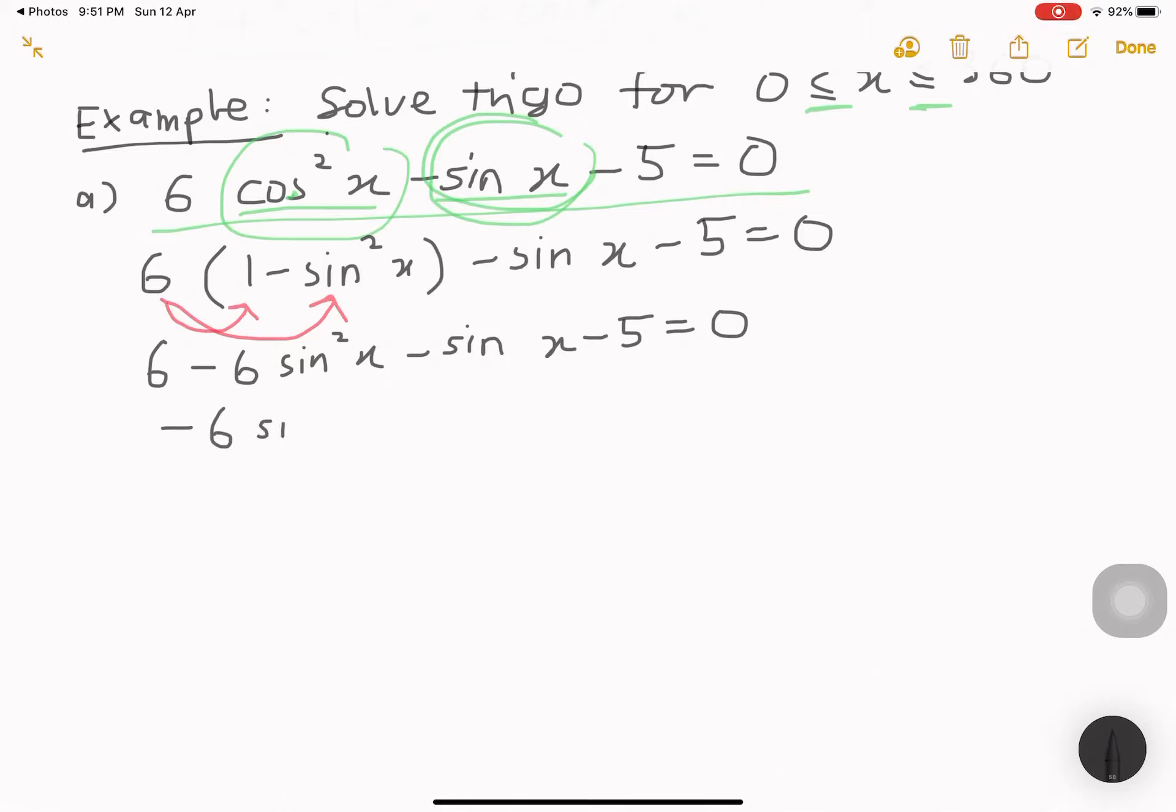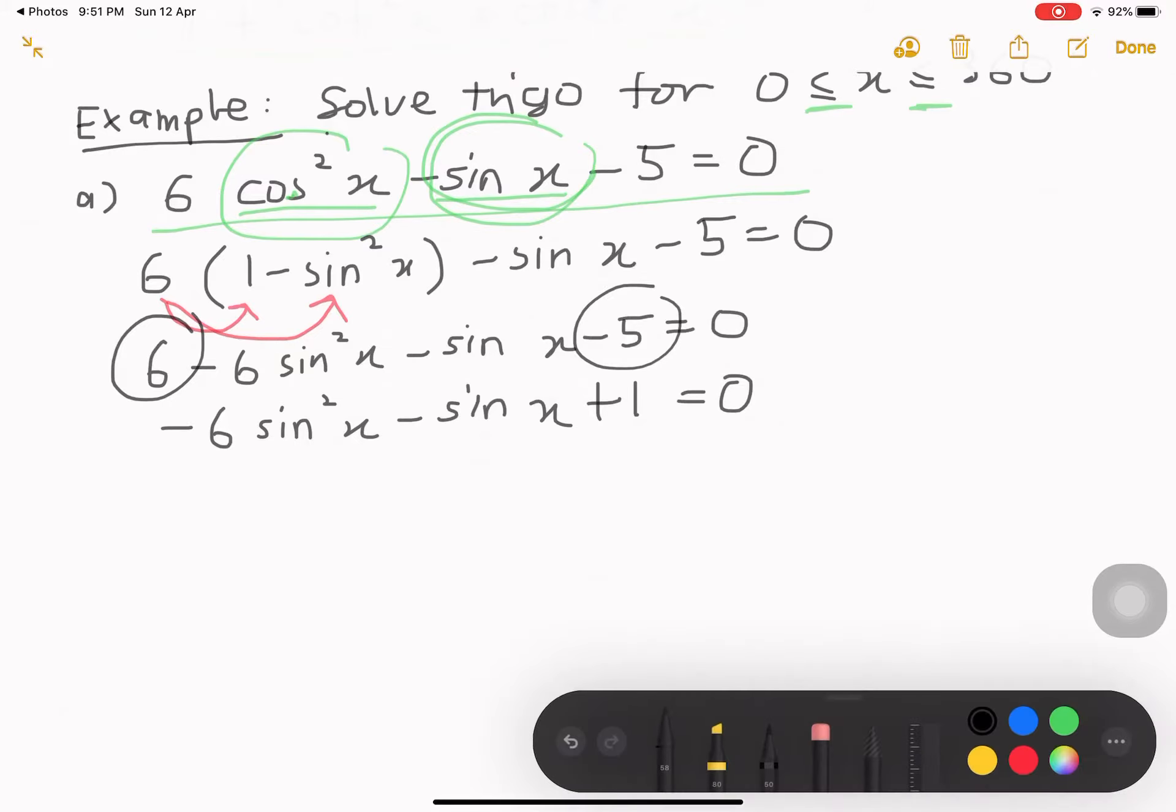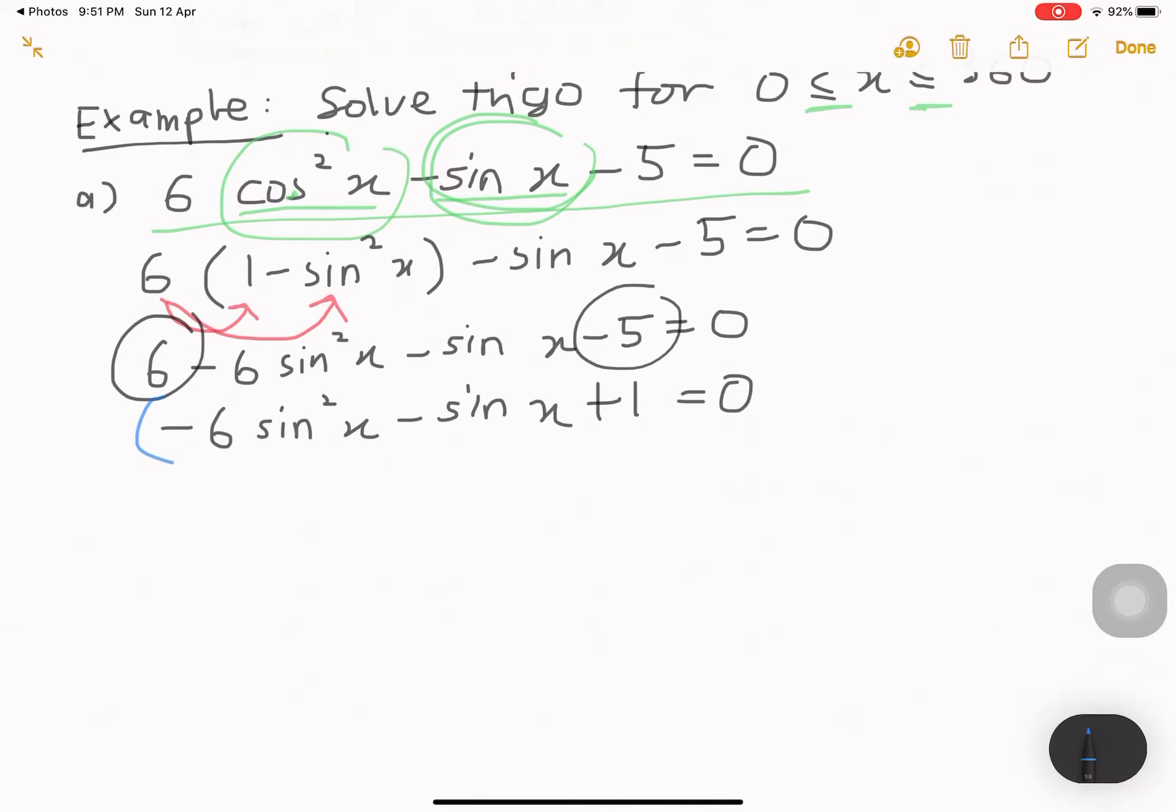What I do next is that I have to rearrange it so that the highest power will be in front. Then, the second highest power will be the second one and without power will be at the last arrangement. What I do next is 6 sin square x minus sin x. 6 and negative 5, if I have to solve this, I get plus 1 equals to 0.